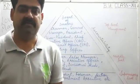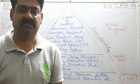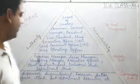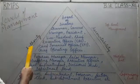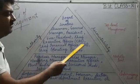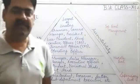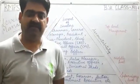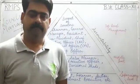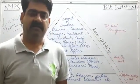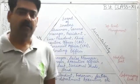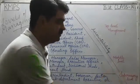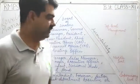Good morning dear students. Today in business studies class we will learn levels of management. On the basis of authority and accountability, levels of management are classified into three categories: top level management, middle level management, and lower level management. Lower level management is also known as supervisory level of management.